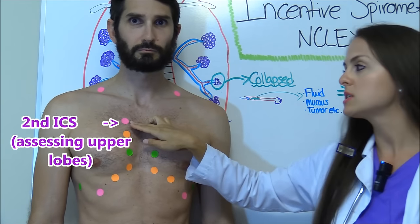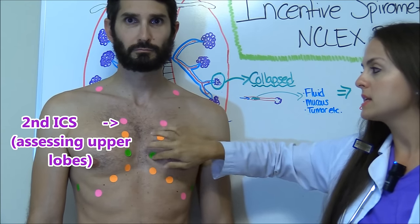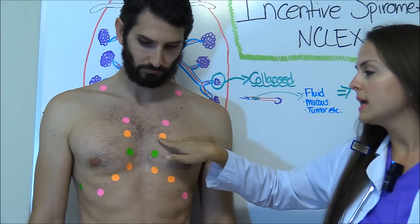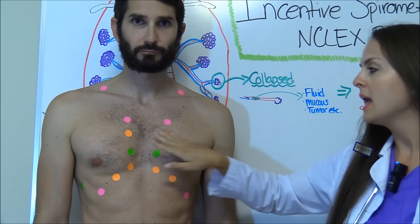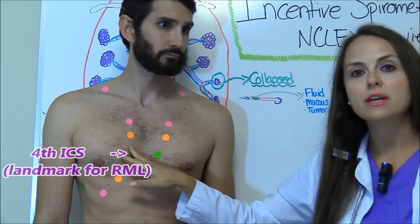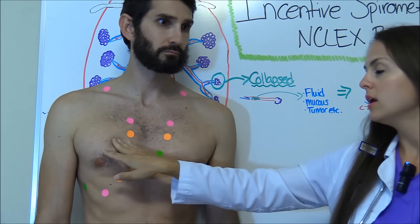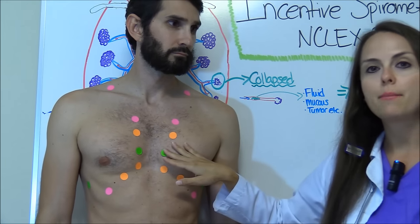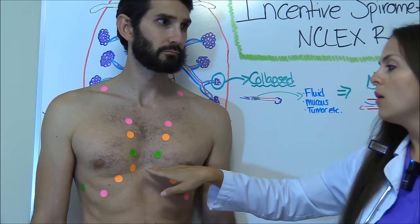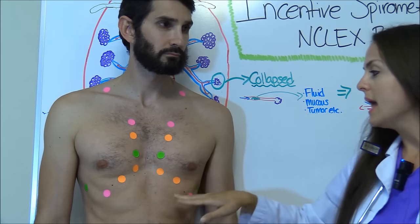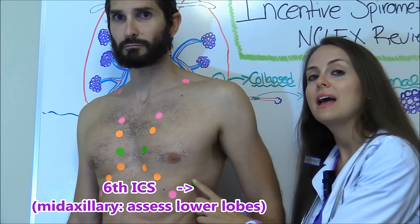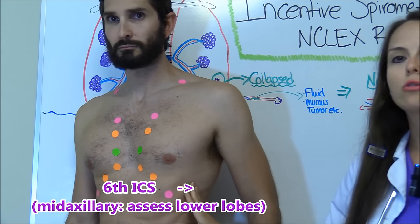Then you're going to go down to the second intercostal space, a little bit over from where your breastbone is, the sternum. This is where you're going to start assessing the upper lobes of the lung. Then you're just going to inch down a little bit to about the third intercostal space and listen there. Then go down to the fourth intercostal space, which is one of the landmarks for the right middle lobe. Then we'll inch down a little bit and listen a little bit more to that right middle lobe, and then we're going to go mid-axillary over here to the side where the armpit is, at the sixth intercostal space, where we're going to be assessing our lower lobe.